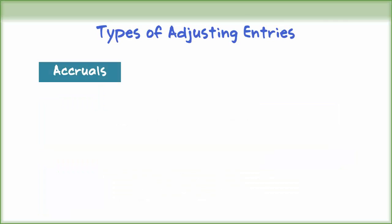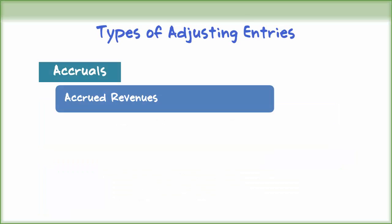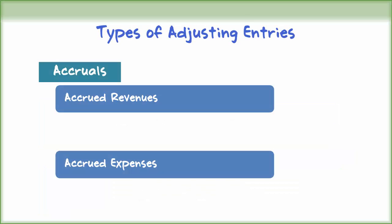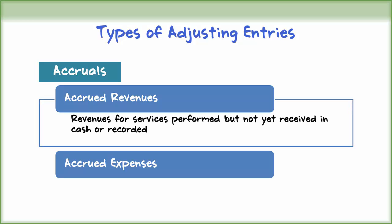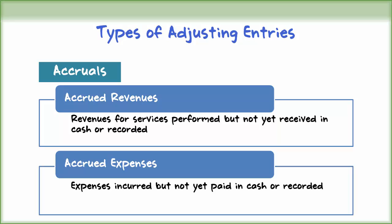Accruals are further classified into accrued revenues and accrued expenses. Accrued revenues are revenues for services performed but not yet received in cash or recorded. Accrued expenses are expenses incurred but not yet paid in cash or recorded.